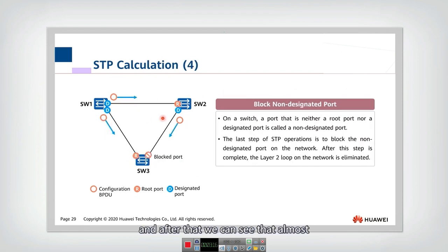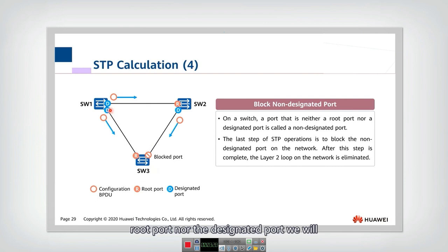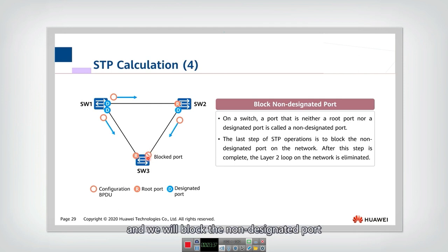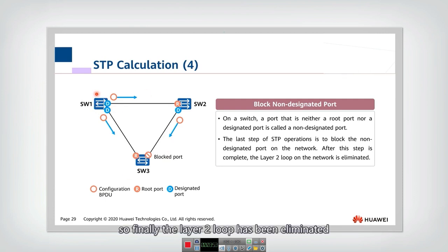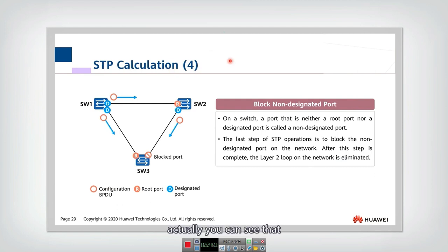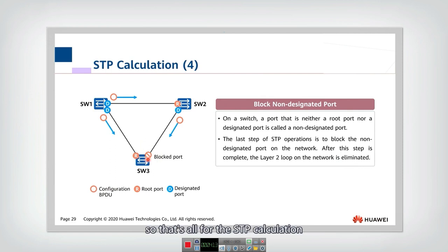After step three, almost all ports have been allocated as either root ports or designated ports. The remaining ports — those that are neither root ports nor designated ports — are called non-designated ports, and we will block them. When a port is blocked, its link is also blocked, so the loop topology becomes a tree topology with switch one as the root. The layer-two loop has been eliminated. To summarize: first select the root bridge, then select the root port, then select the designated port, and finally block the non-designated ports.